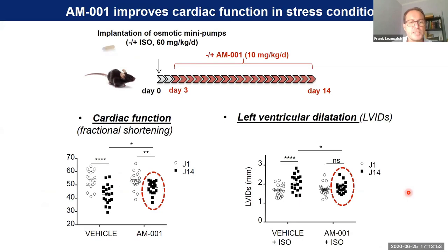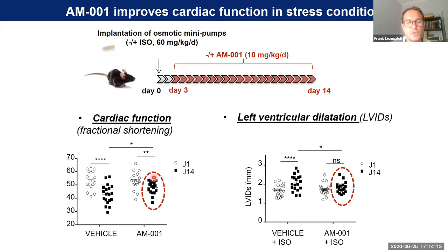Regarding cardiac function, after several weeks of isoproterenol treatment there is a decrease of fractional shortening. When you treat the animals with AM001, you prevent this decline and improve cardiac function — fractional shortening is increased compared to the vehicle group. In accordance with this finding, ventricular dilatation was also reduced in the group treated with AM001.